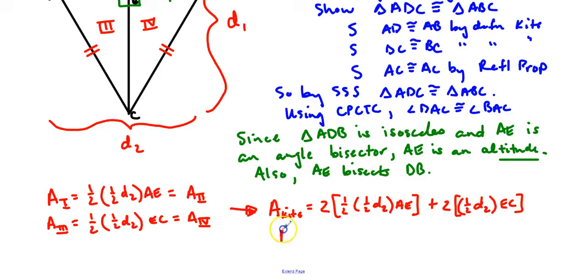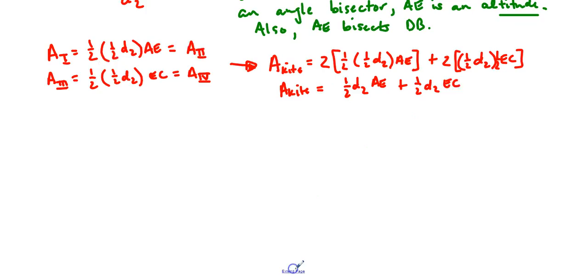Simplify a little bit. 2 times one-half is going to cancel. We're going to get one-half D2 times AE plus, again, two times one-half. Man, I actually forgot a one-half over here. So, sorry about that. But, 2 times one-half is going to cancel. We're going to end up with one-half D2 again, times EC.